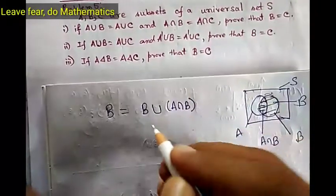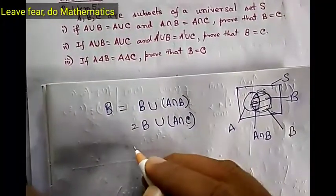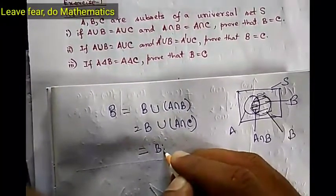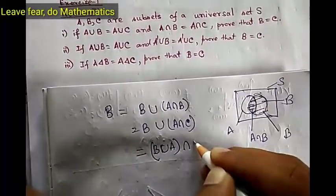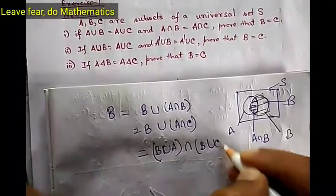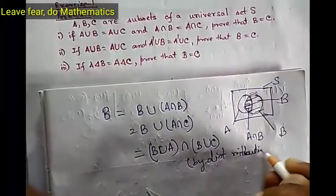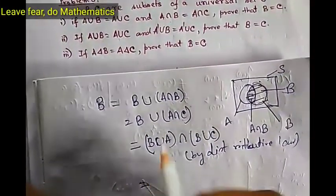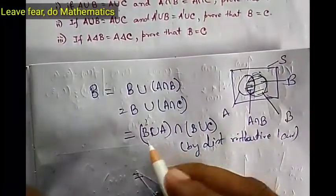What is given? A intersection B equals A intersection C. So in place of A intersection B, put A intersection C. Now by distributive law, we can write this as B union (A intersection C), which equals B union A intersection B union C. Then, since A union B equals A union C is given, in place of B union A put A union C — because A union B equals B union A — so we can write (A union C) intersection (B union C).